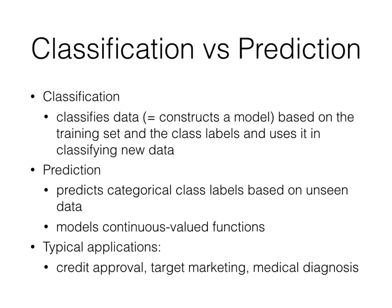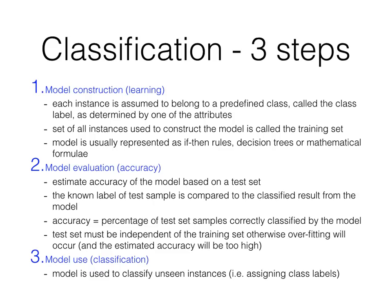Let's look at the three steps involved in classification. The first step is model construction or learning. Each instance is assumed to belong to some predefined class, called the class label or the target attribute. Often the target attribute is the final column of the table. When we put all the data points together that we'll use to construct the model, that's called the training set. The model can be represented in different ways: if-then rules, decision trees, or mathematical formulas.